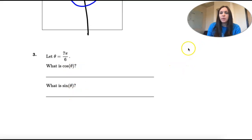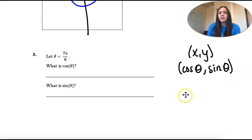So remember, we went and found all of those x, y points around the unit circle, and we need to know that x corresponds with cosine and y corresponds with sine. So this is asking what's the x value? What's the y value?